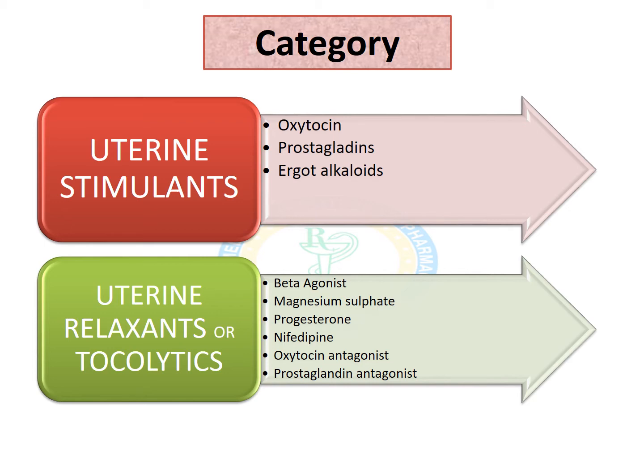Under uterine stimulants, we have three major drugs: oxytocin, prostaglandin analogs, and ergot alkaloids.